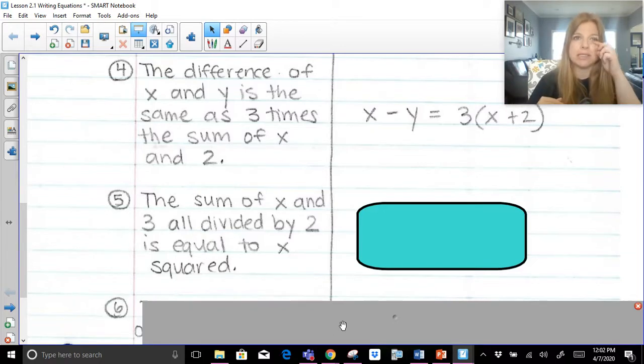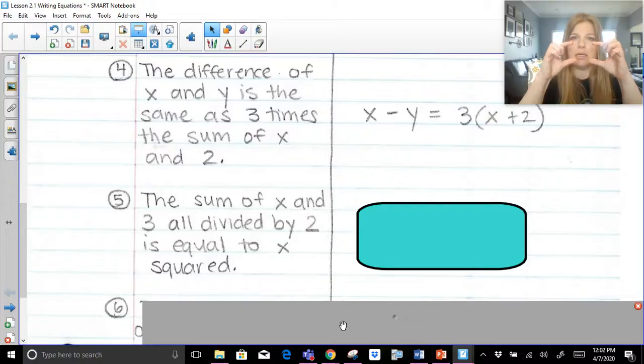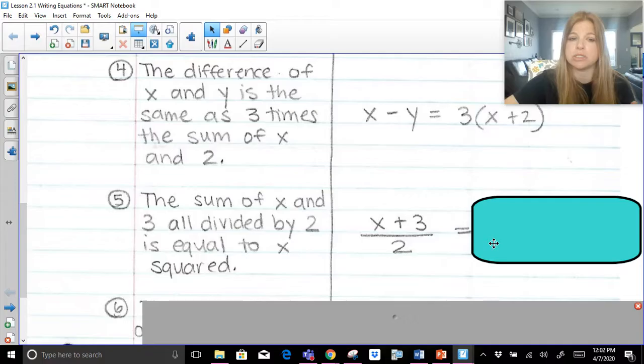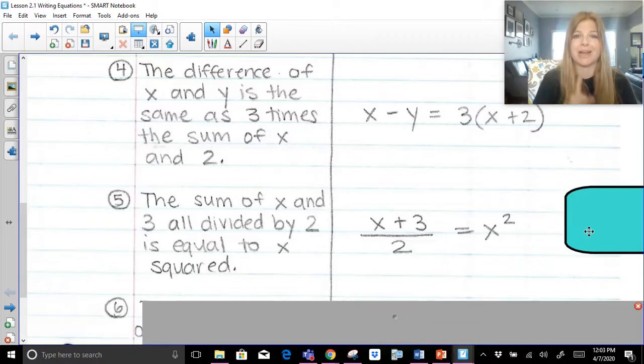So x plus 3 would be in my numerator divided by 2. So the sum of x and 3, all divided by 2, is equal to x squared. Now remember, squared is an exponent, and it's the second exponent. It's the second power. So it's going to be x to the second power. That's what x squared looks like.